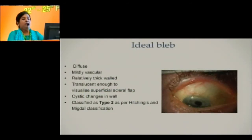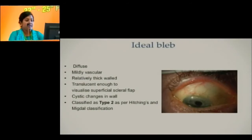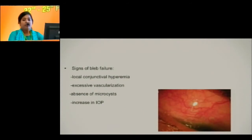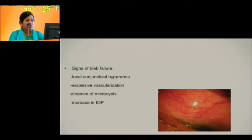An ideal bleb has to be diffuse, mildly avascular, relatively thick-walled, and translucent enough to visualize the superficial scleral flap. Cystic changes in the wall should be seen, and it is classified as type 2 per Hitchings and McDull classification. Signs of bleb failure are local conjunctival hyperemia, excessive vascularization, absence of microcysts, and increase in IOP. In late failure, it can either get encapsulated or become completely flat due to scarring.